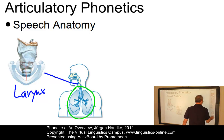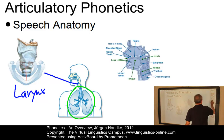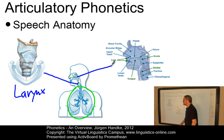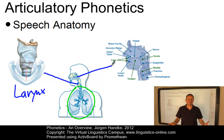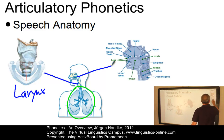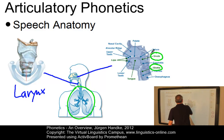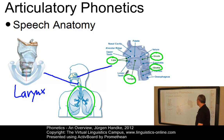Last but not least, the vocal tract itself. Here is the vocal tract, and the vocal tract modifies and modulates the airstream by means of several articulators. Let us mark those articulators which are actively involved in the modification of the airstream — those four active articulators.